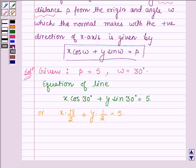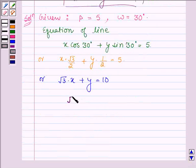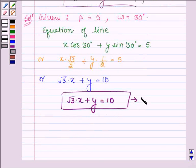Or we have root 3 x plus y equals 10. Thus, the equation of the line which satisfies the given condition is given by root 3 x plus y equals 10. So this is our answer.